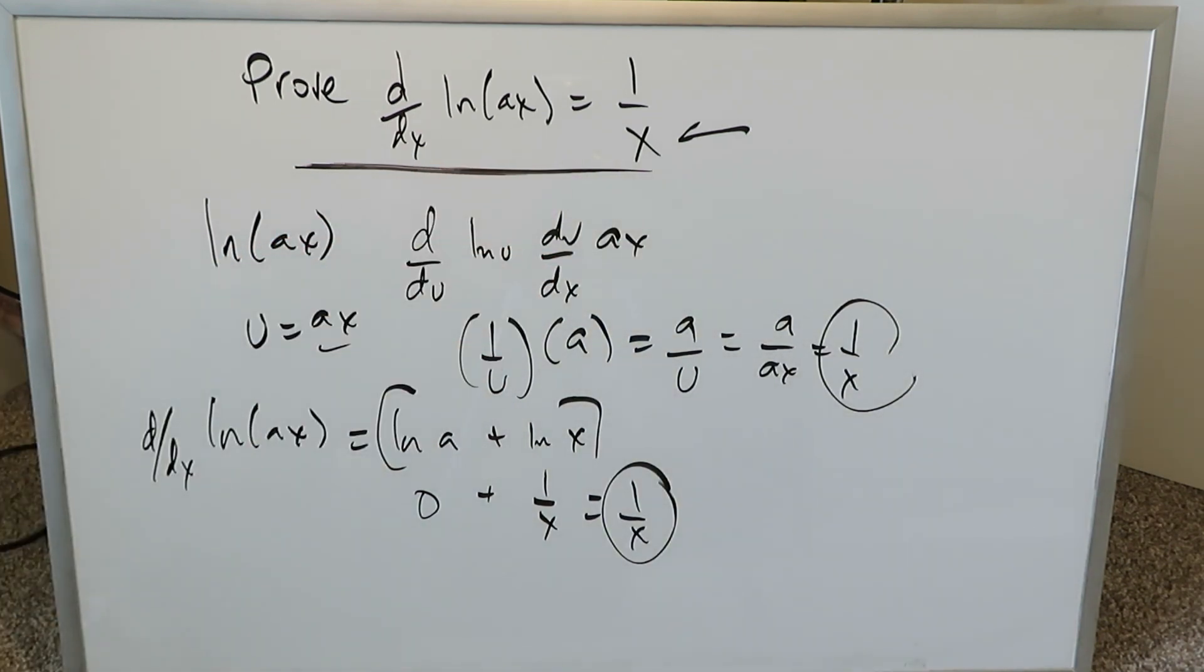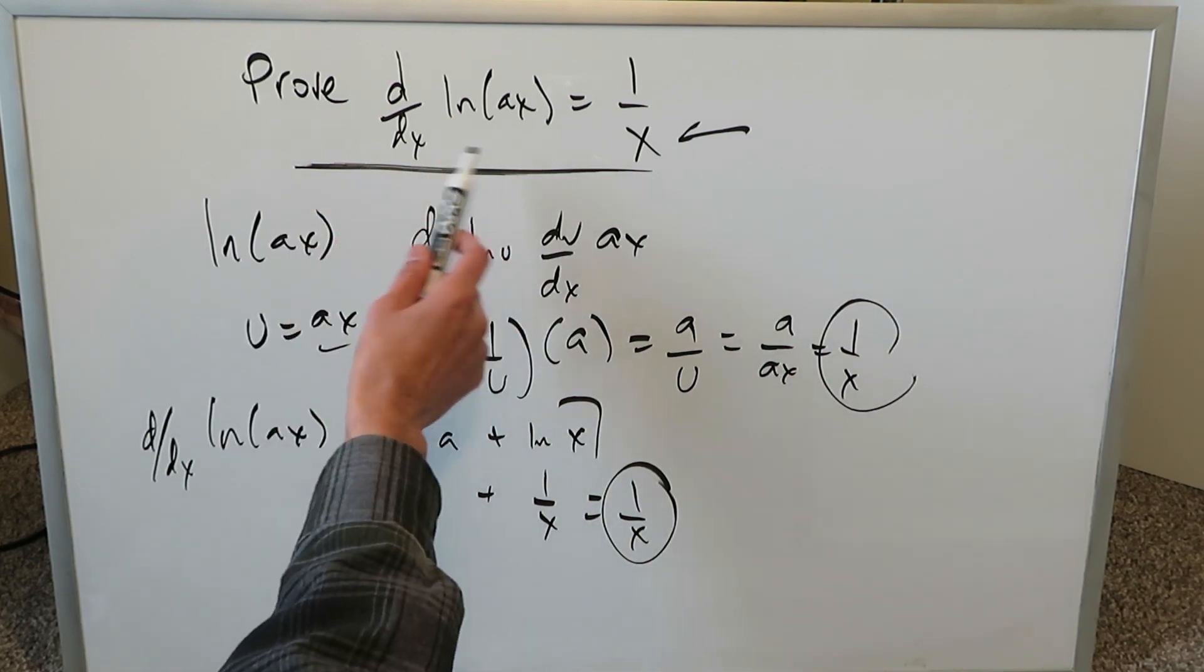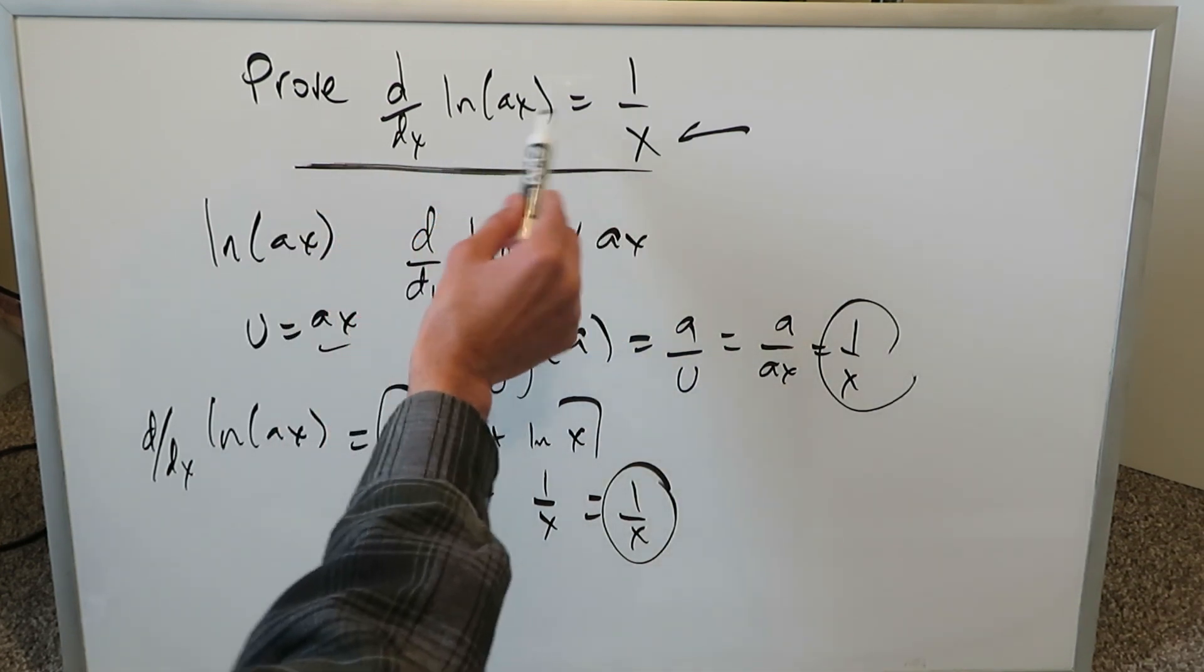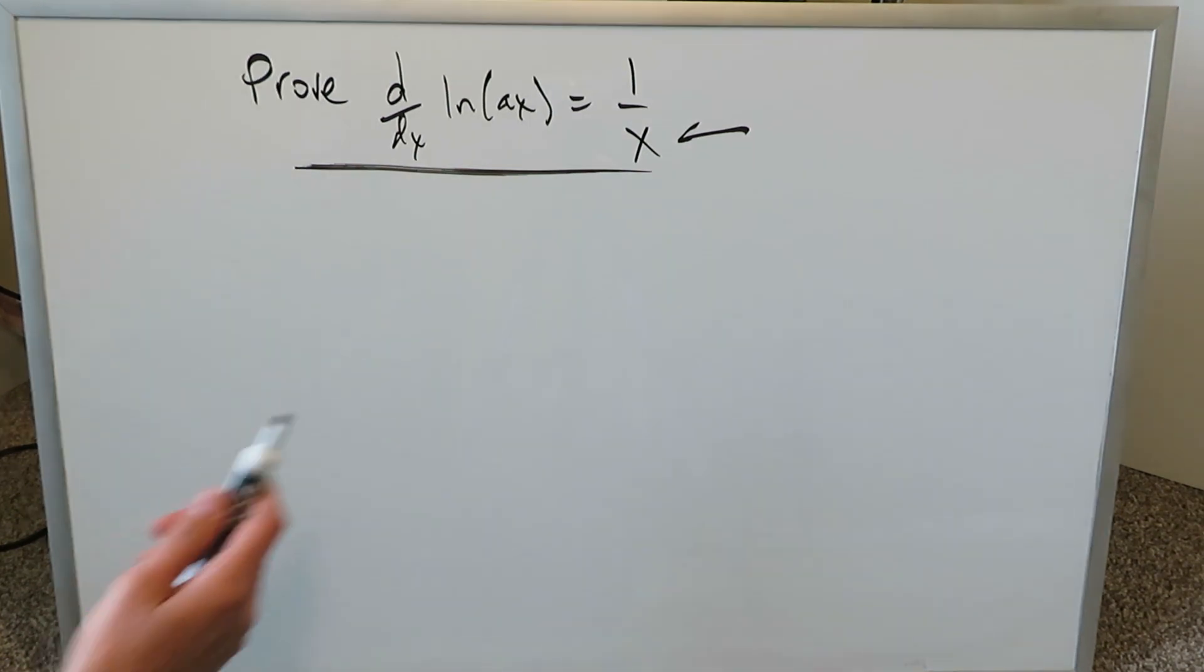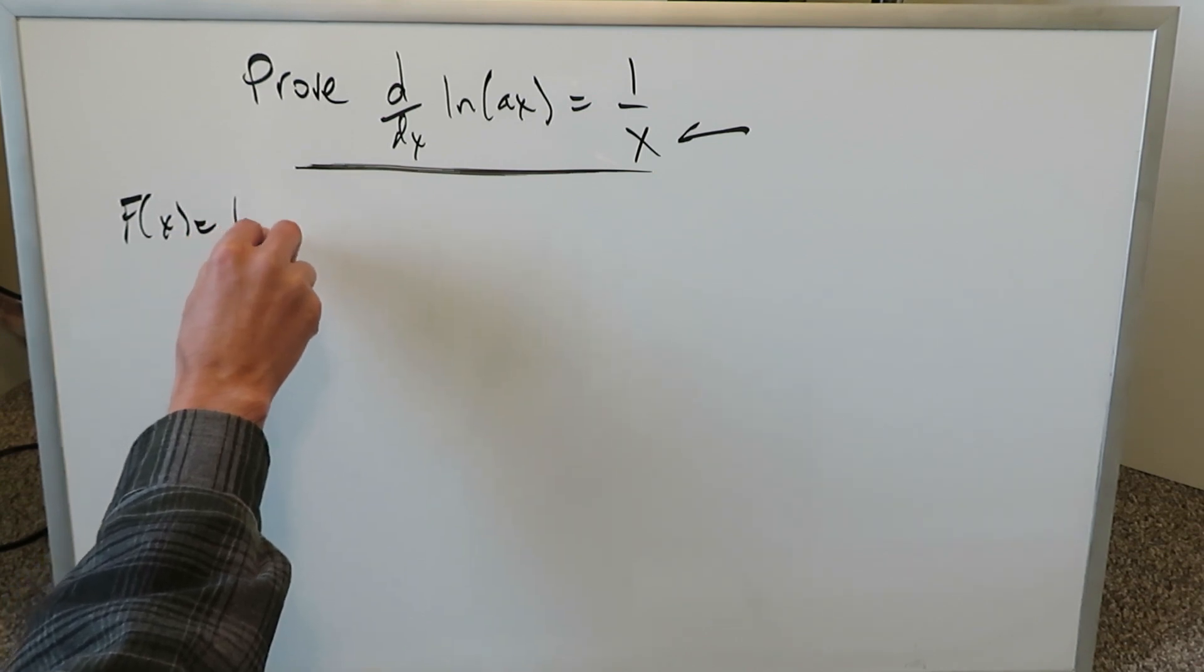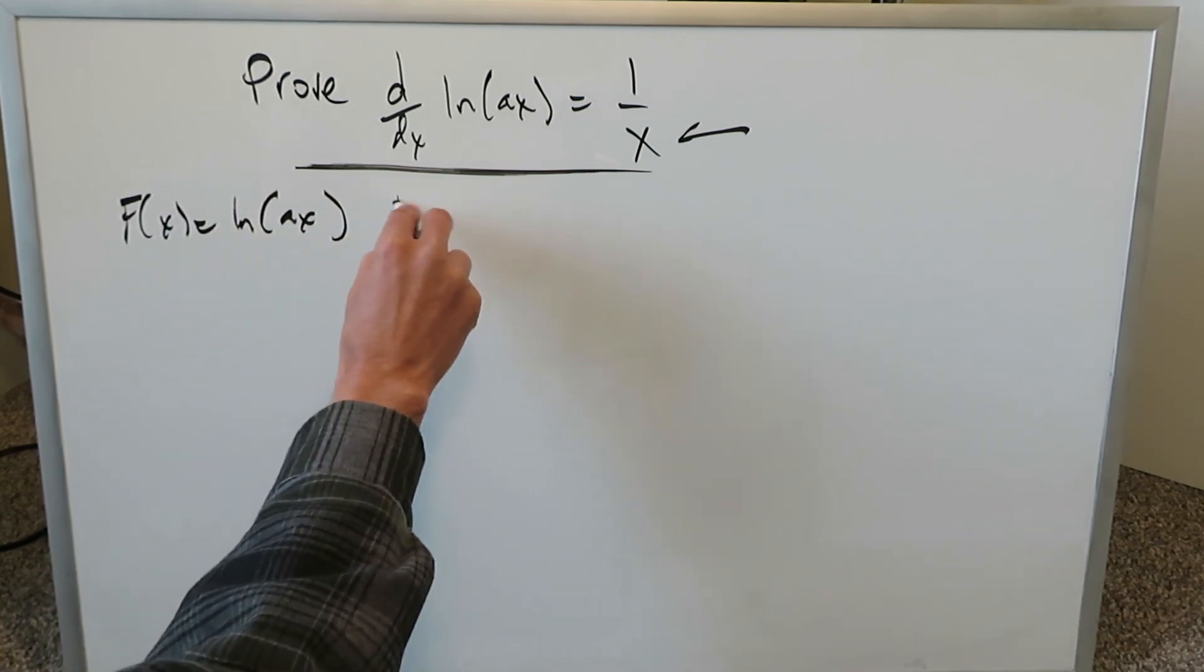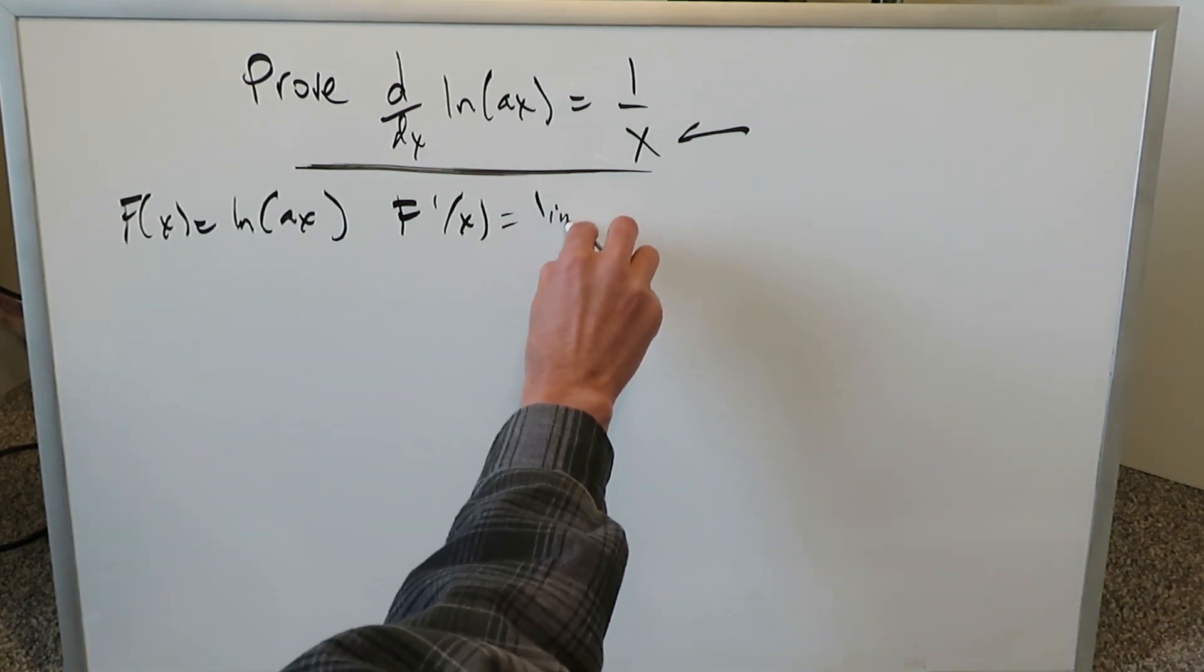We have to prove why that is the case and in the remainder of the video we'll be using the laws of limits and the basic definition of derivative to very easily prove this derivative. The whole procedure begins as such. If f of x is equal to natural log ax and we have to find the derivative of this, you have to use a basic definition of derivative and you know that employs a limit.